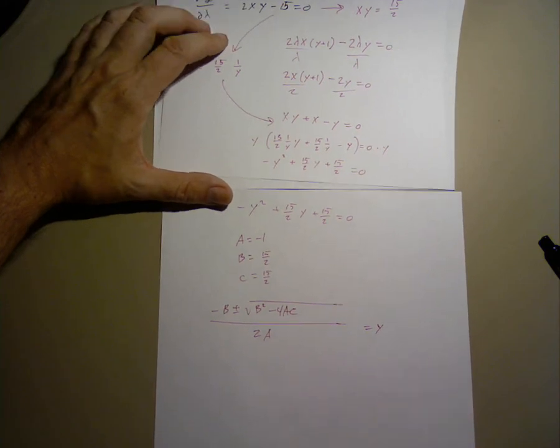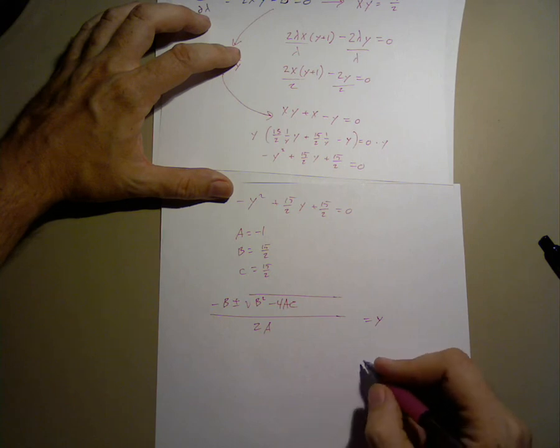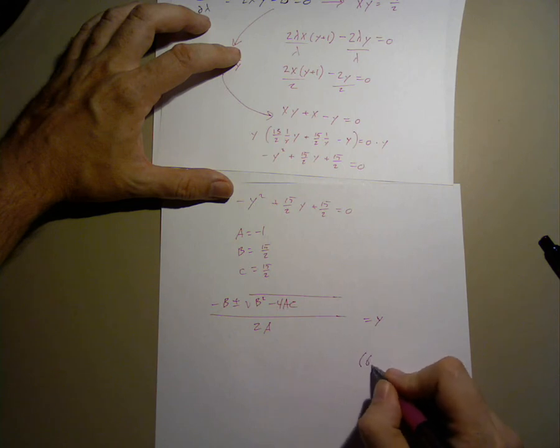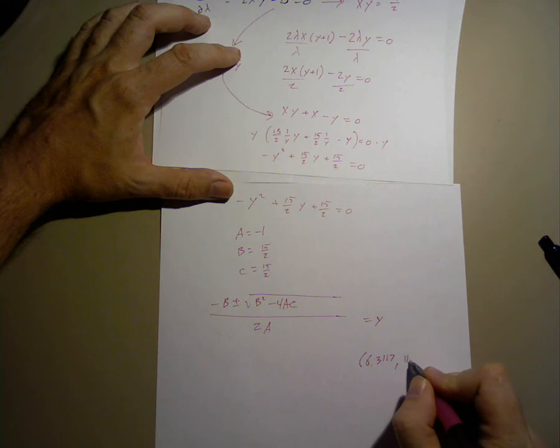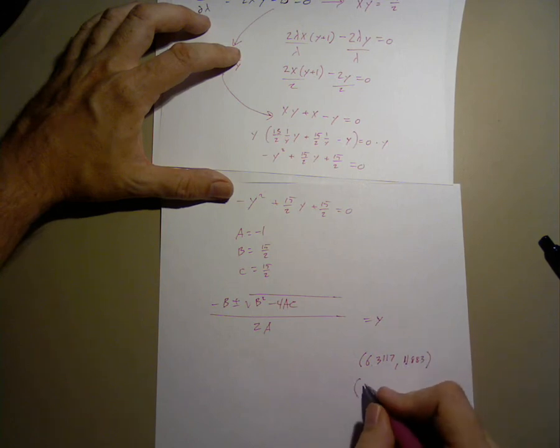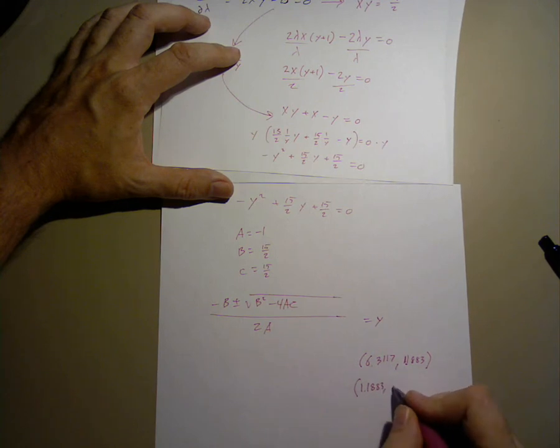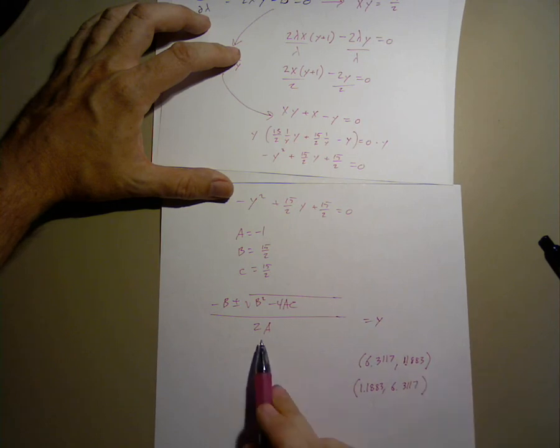If we plug this into our calculators, we get solutions for x and for y. We get either for x, we get 6.3117 comma 1.1883, that's 1.1. Also, we get 1.1883, 6.3117, after solving this equation.